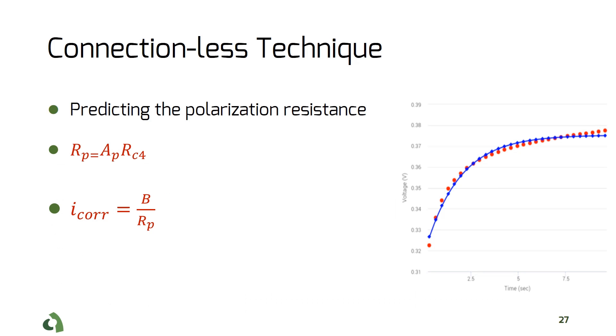Certain parameters such as polarization resistance and corrosion rate are then measured by extracting parameters from the fitted curve.